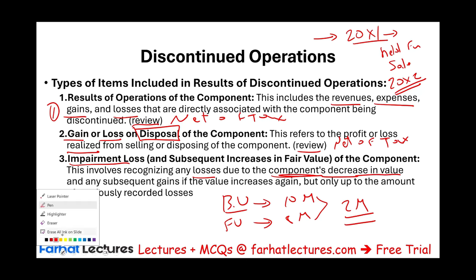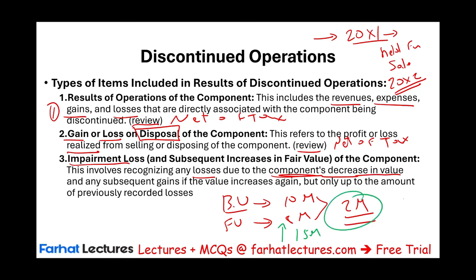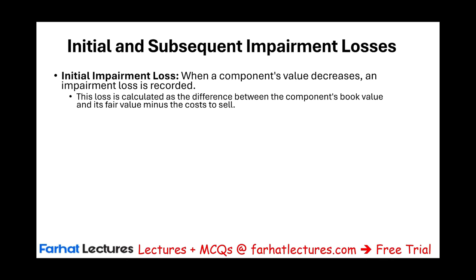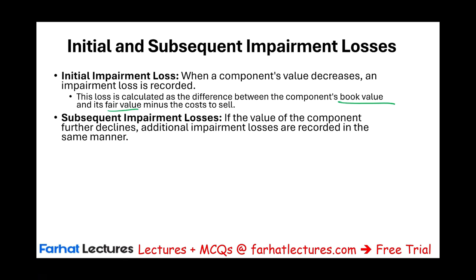If the product of that division becomes marketable again and the fair value jumps to $15 million, can you recover the $2 million loss? Yes — you can recover up to the amount you recorded as losses, which is $2 million. When the component value decreases, an impairment loss is recorded. This loss is calculated as the difference between book value and fair value minus cost to sell. If the value further declines year after year, additional impairment losses are recorded in the same manner until you sell it. If there is a subsequent increase in fair value, it is recognized only up to the previous impairment losses — for example, if you recorded $5 million in total impairment losses, you can recover no more than $5 million.